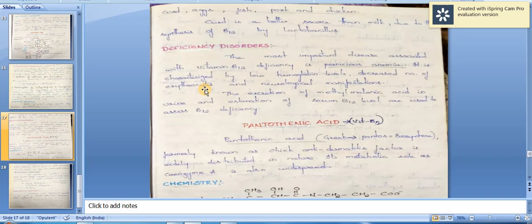The excretion of methylmalonic acid in urine and estimation of serum B12 level are used to assess B12 deficiency. Autoimmune destruction of gastric parietal cells that secrete intrinsic factor—in the absence of intrinsic factor, vitamin B12 cannot be absorbed.